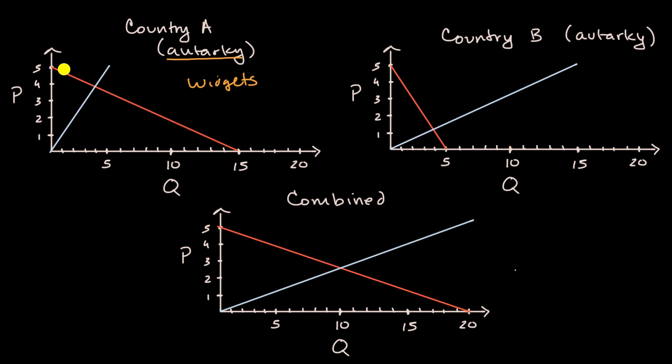You can see the demand curve in this market in orange, and the supply curve. When this country is operating in isolation, this market for widgets has an equilibrium price that looks like it's a little bit under $4, and the equilibrium quantity looks like it's about a little under four units per time period.